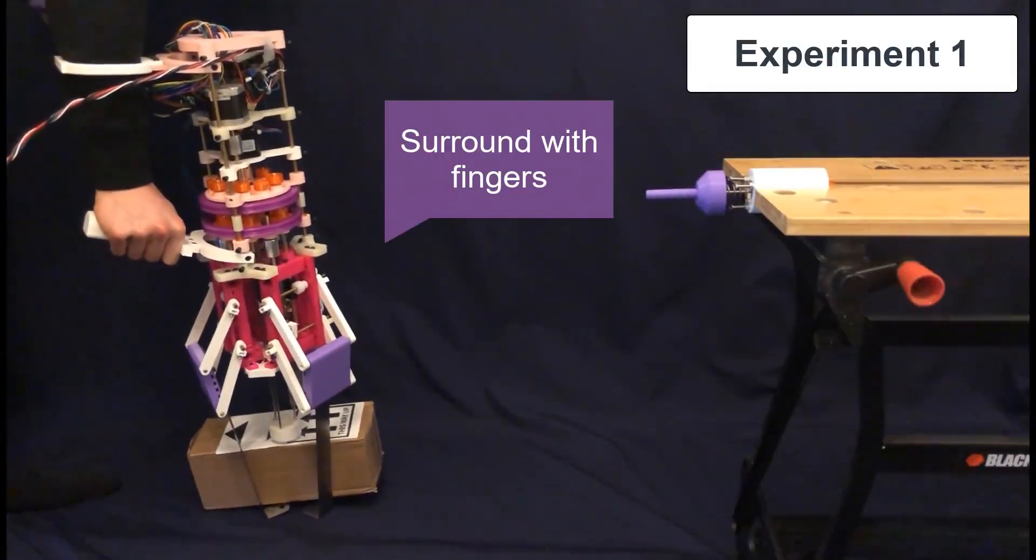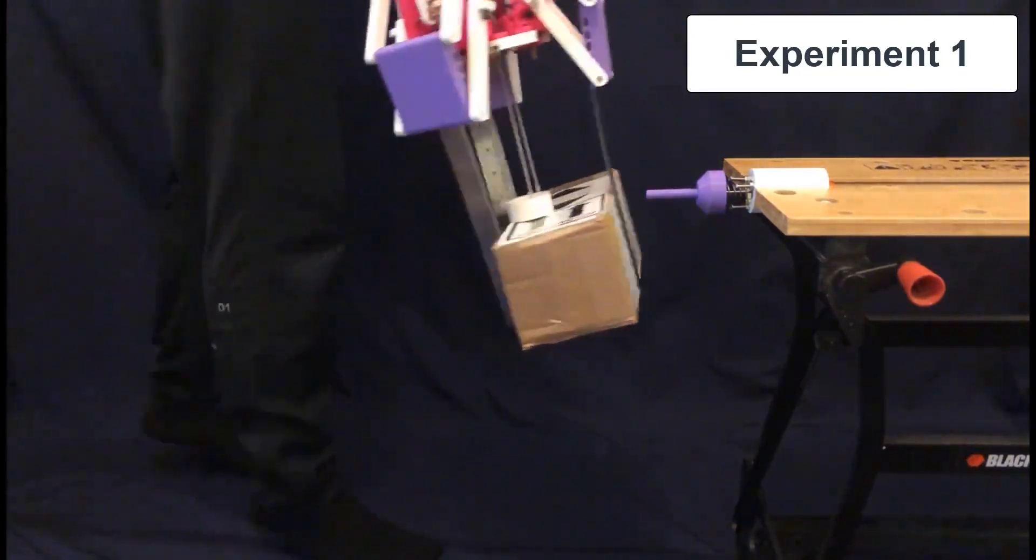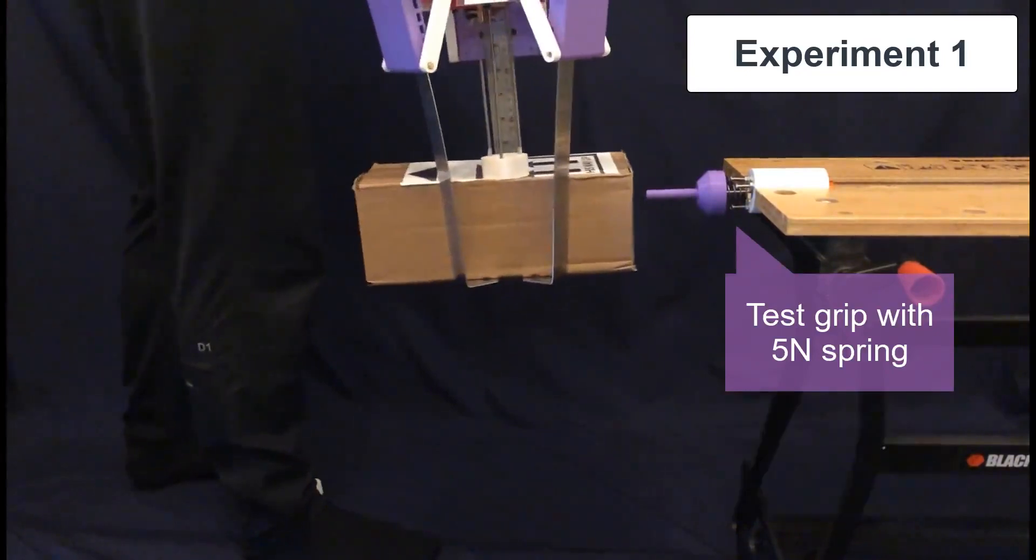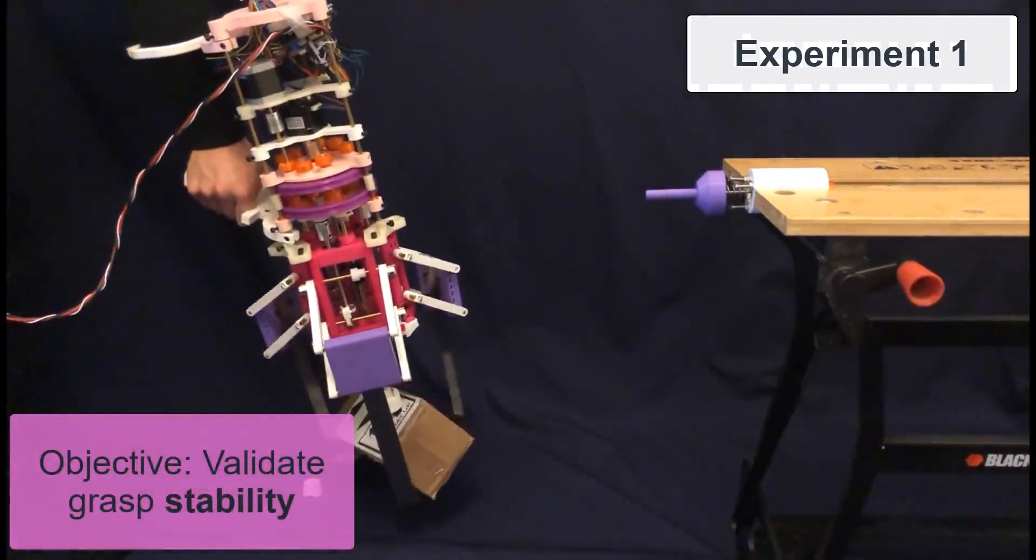Objects are surrounded by the fingers and pressed with the palm, picked from stands, and then tested with a 5 Newton spring in a stable and unstable direction, applying disturbances to validate grasp stability.